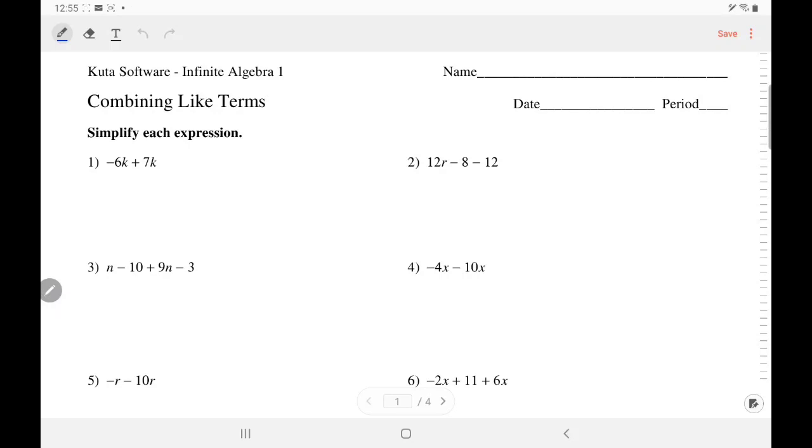Okay, today we're going to do CUDA Software Algebra 1, combining like terms. Beginning with number 1, we're going to try to combine these two like terms, negative 6k and 7k.